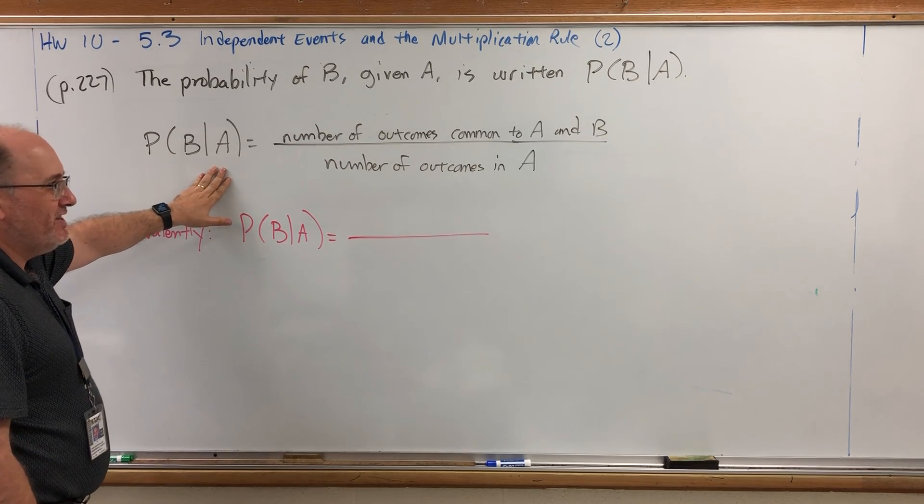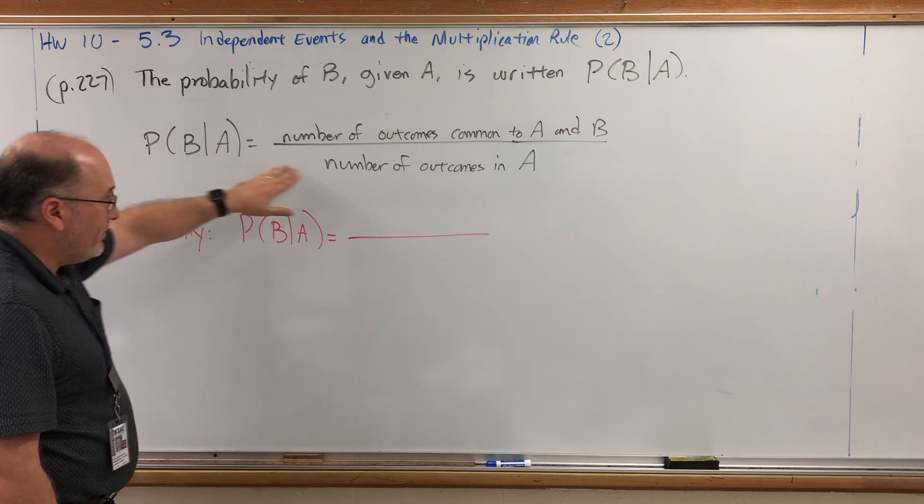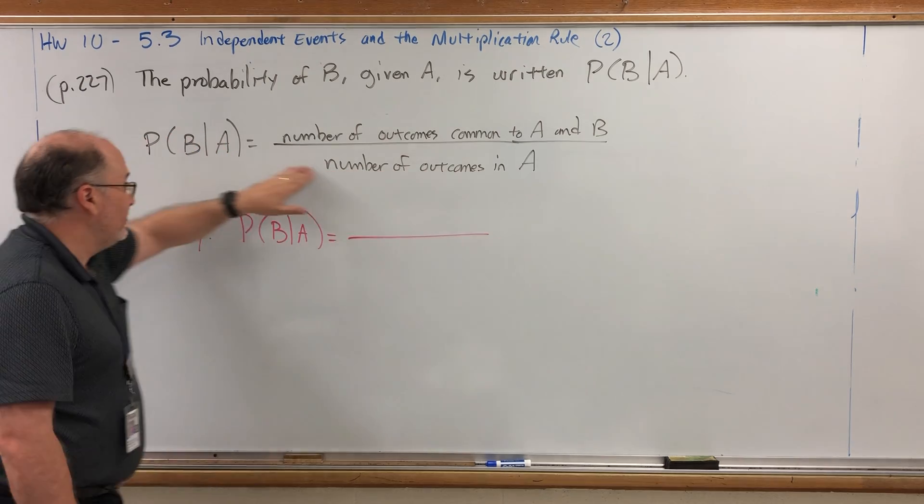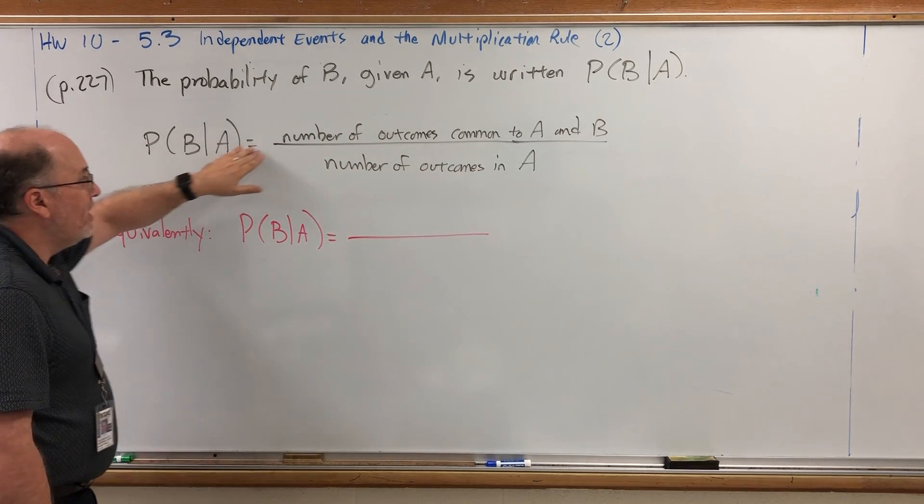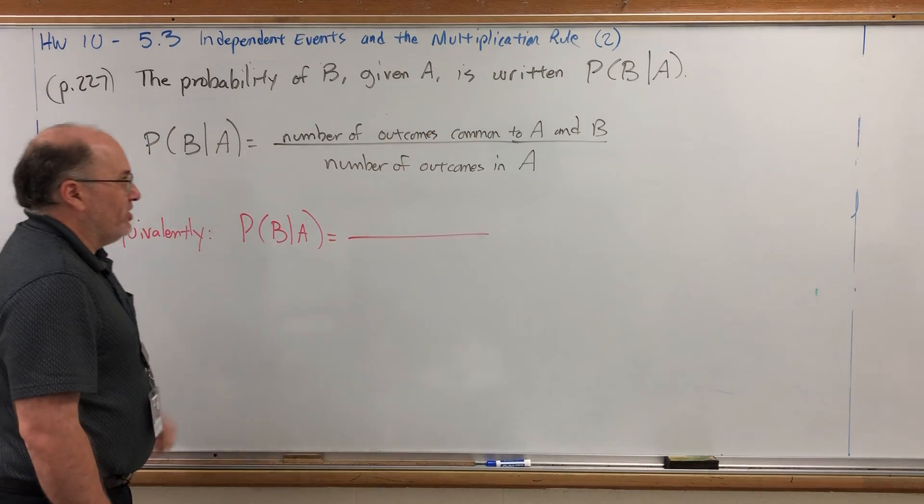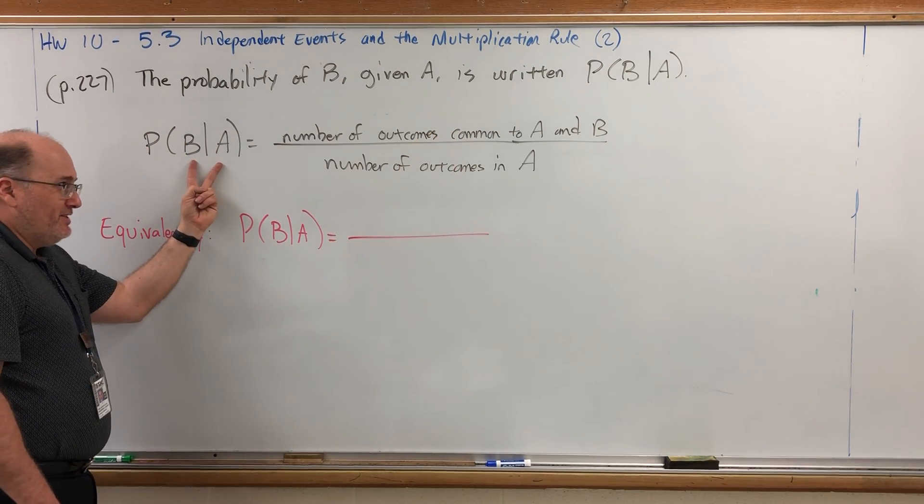The denominator was the number of outcomes in the condition, because we're assuming this already happened. The numerator, however, was the number of outcomes common to both of these.